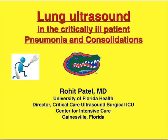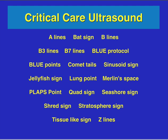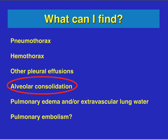This lecture is going to focus on evaluation of lung ultrasound in the critical patient for pneumonia and other consolidations. As discussed in previous lectures, remember in lung ultrasound there are a lot of different signs and lines, and eventually we're going to use all these to evaluate the acutely respiratory failing patient with either hypoxia or hypotension. These are the other things that we can find, and again we're focusing on alveolar consolidations here.